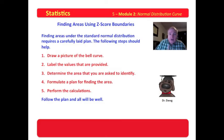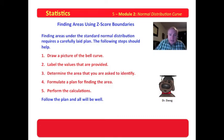You start by drawing the stinking picture. You label the values that are provided. Now, if your values are already Z-scores, everything's fine. If you're given values that are not Z-scores, then on the picture you take those values and convert them to Z-scores. You determine the area that you're asked to identify, you formulate a plan for that area, and perform the calculations. If you follow this plan, all will be well. If you decide not to draw the stinking picture, you're on your own. Now let us look at a problem.